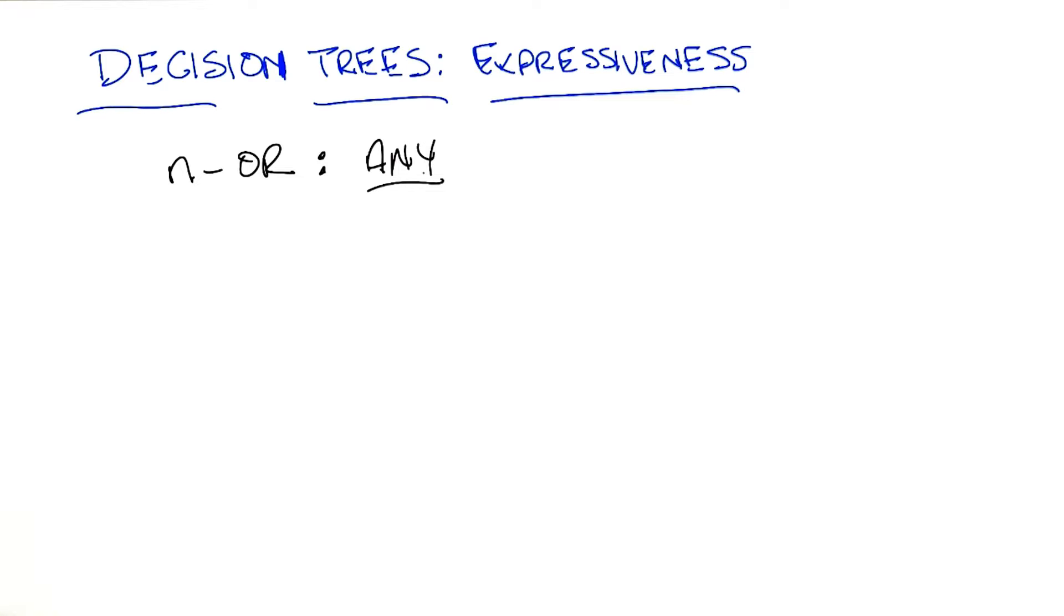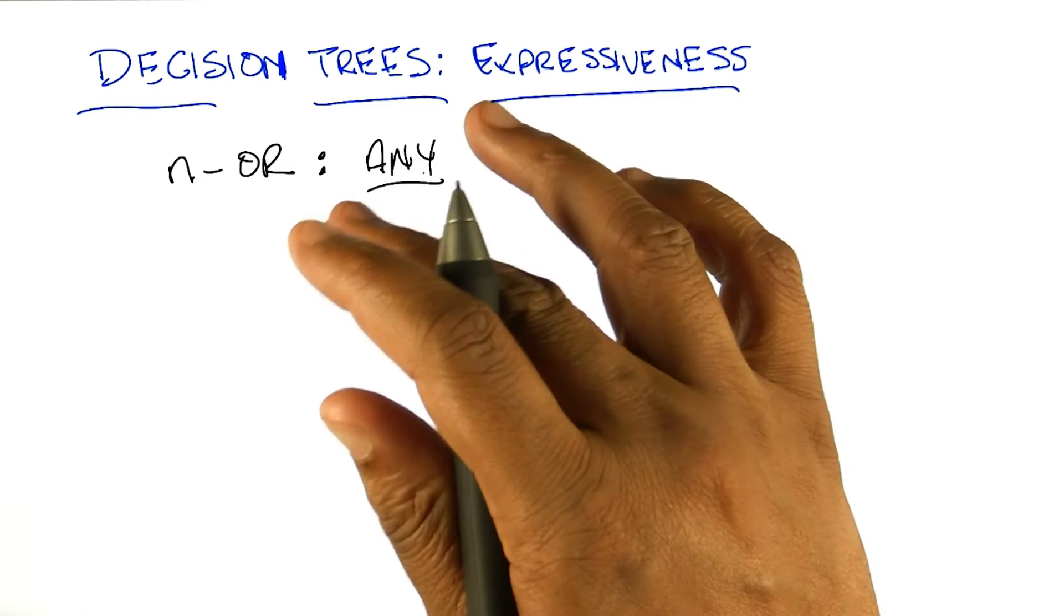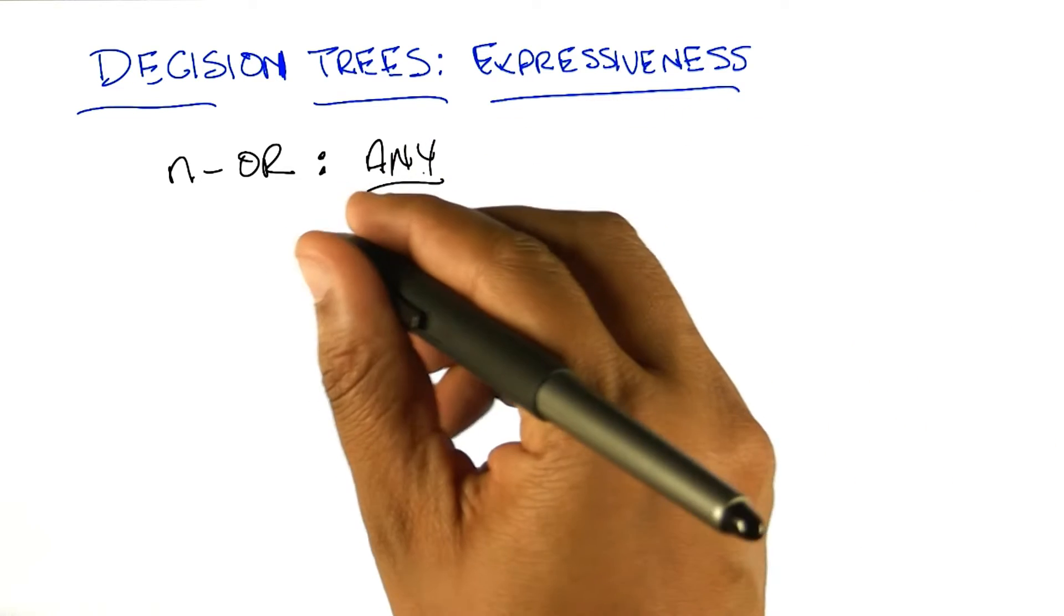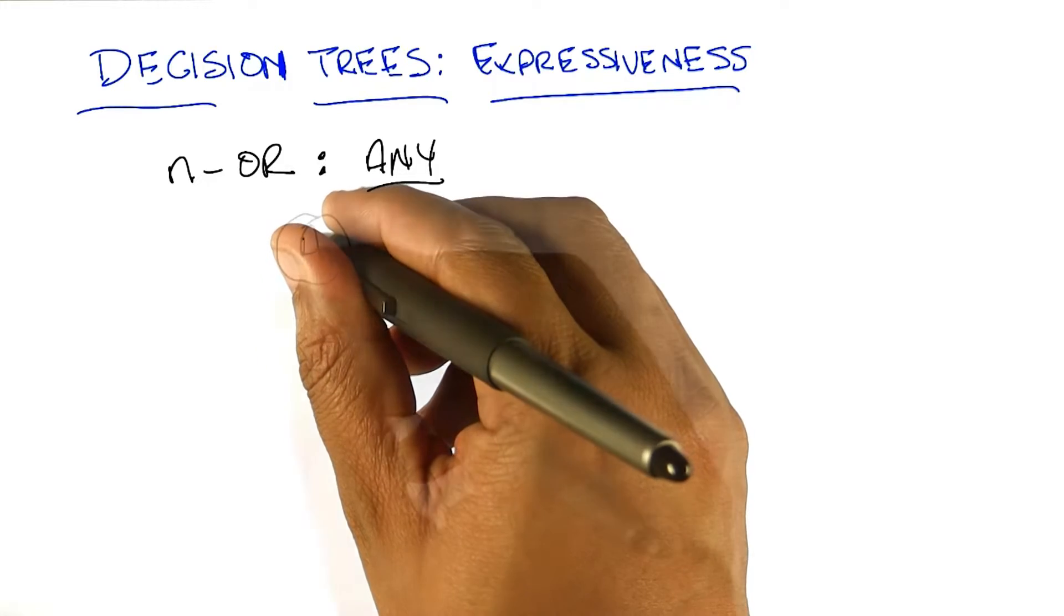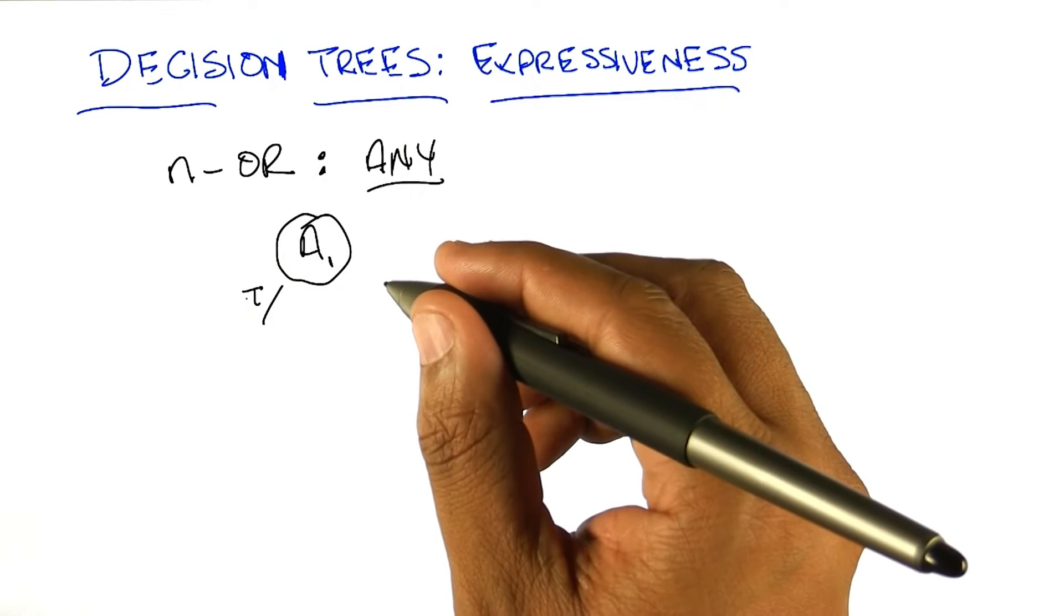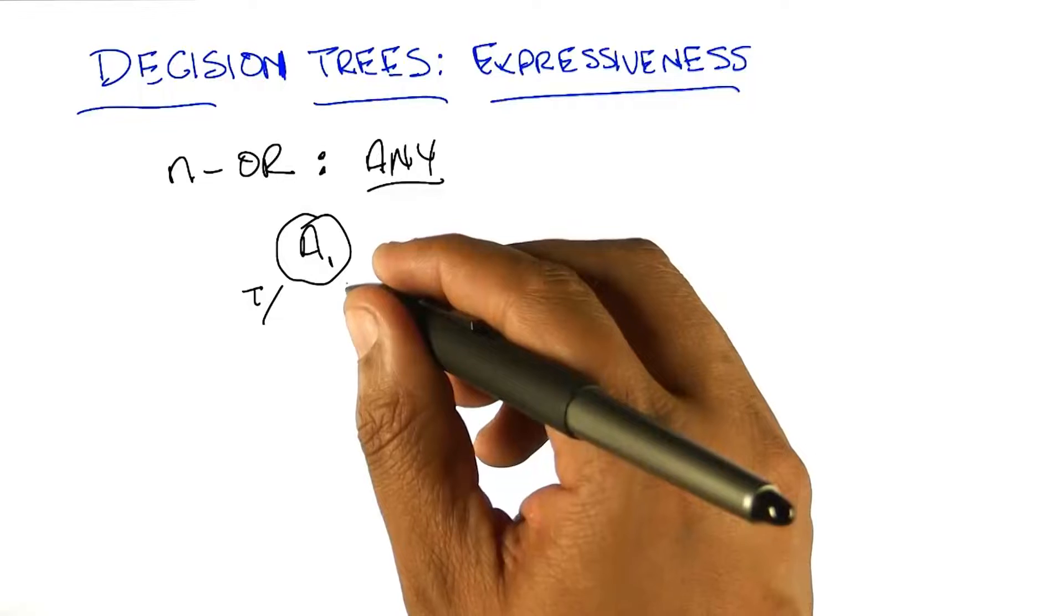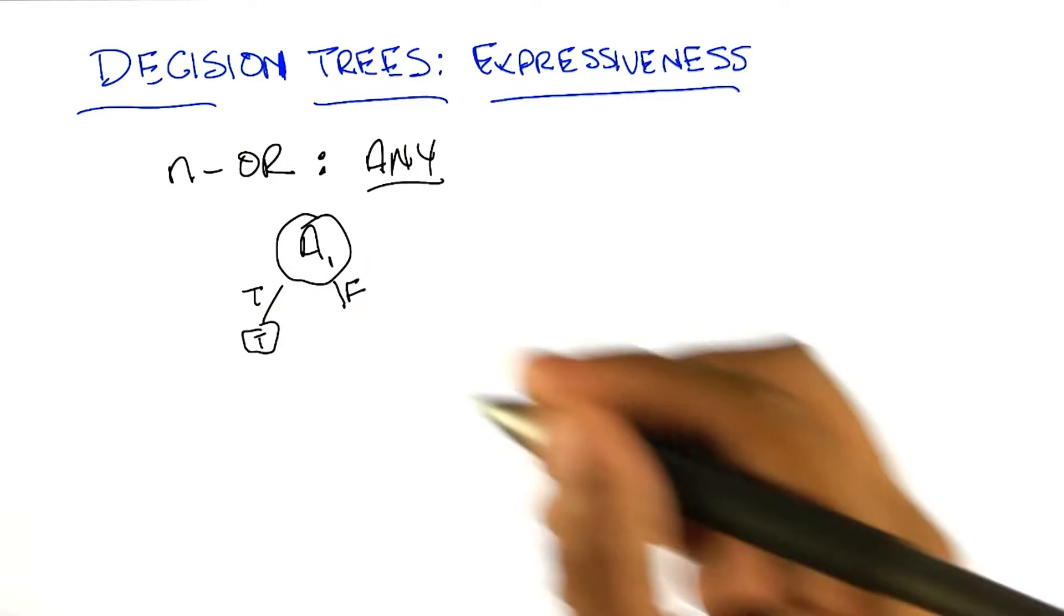We can see that the decision tree for that has a very particular and kind of interesting form. Any ideas about what that decision tree looks like? Going off of the way you described OR in the two case, we can start with that. You pick one of the variables, and if it's true, then any of them is true, so the leaf is true. What happens if it's false?